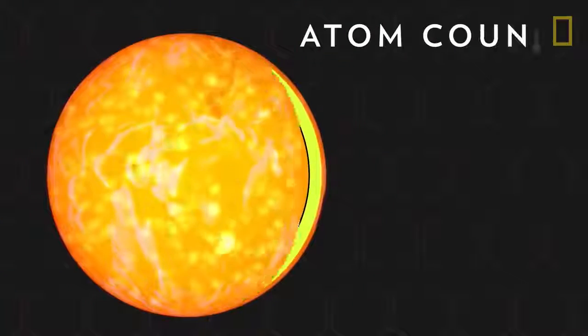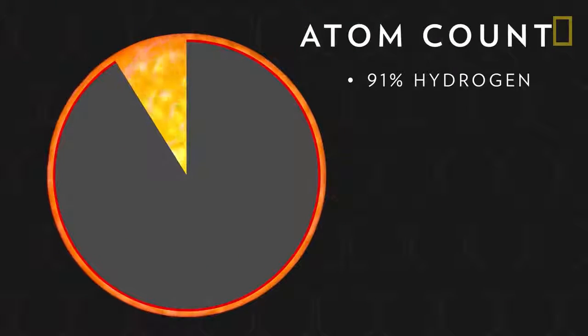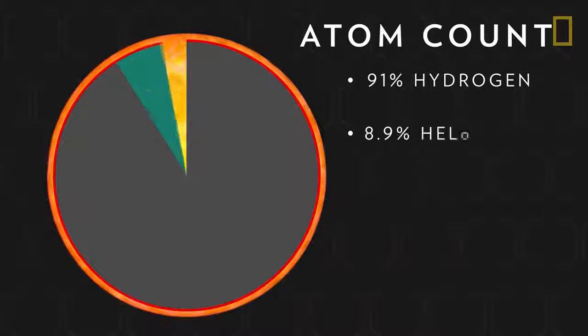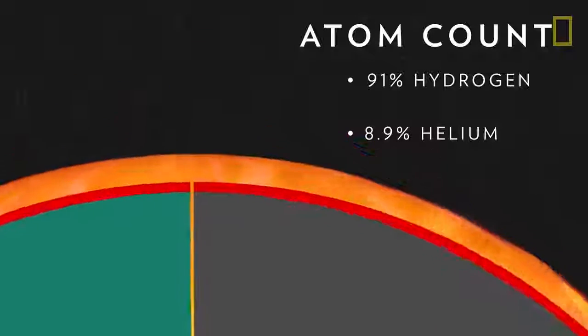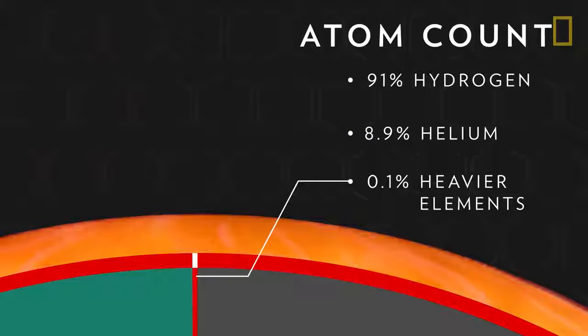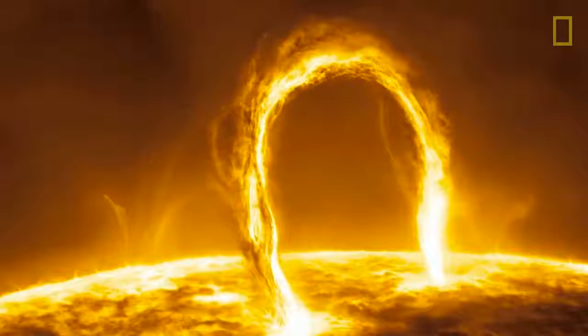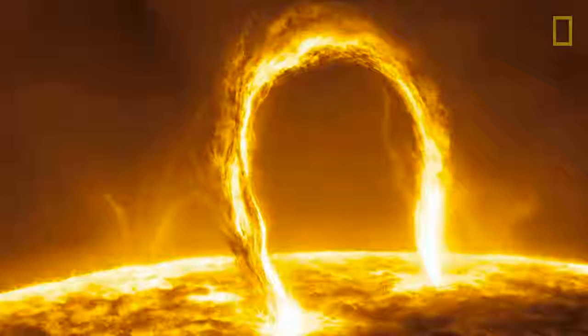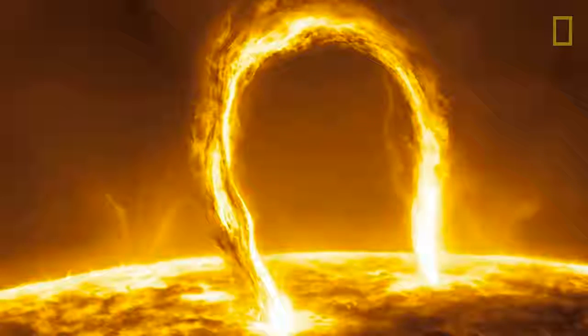In terms of atom count, the Sun is about 91% hydrogen, the Sun's fuel, 8.9% helium, and 0.1% heavier elements, such as carbon and nitrogen. Due to the Sun's extreme temperatures, these elements stay in a gas-like phase called plasma.